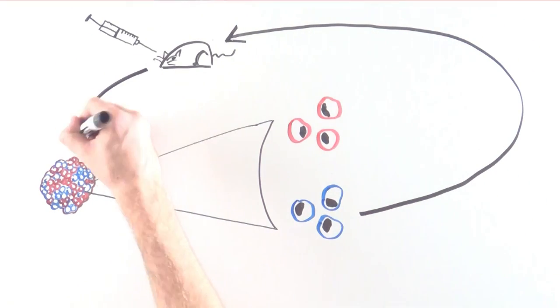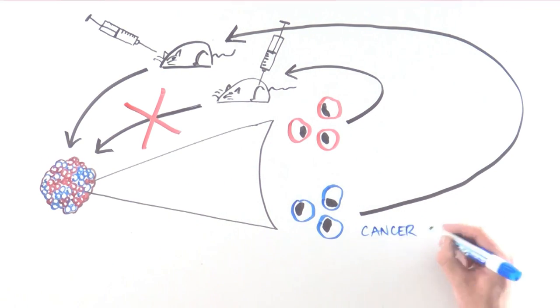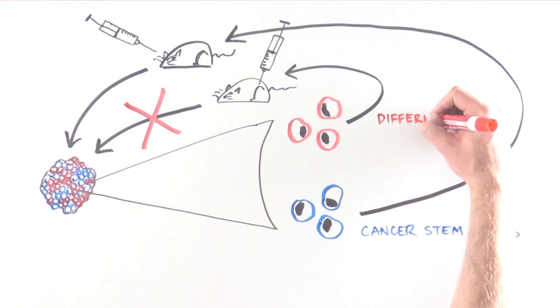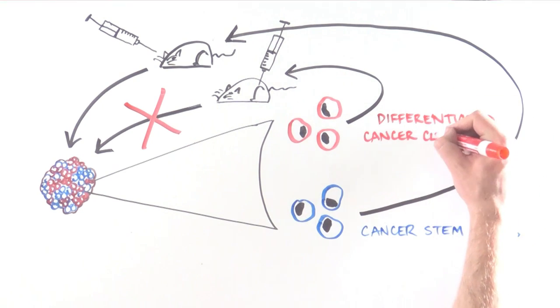When injected into mice, only the cancer cells that resembled stem cells could make another tumor, whose architecture was identical to that of the tumor it came from, with cancer stem cells and differentiated cancer cells.